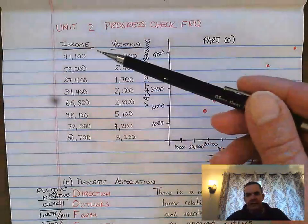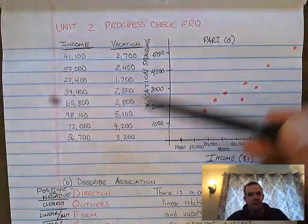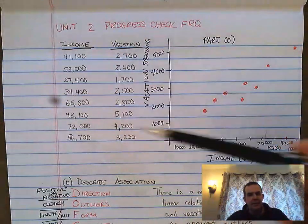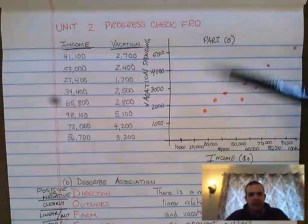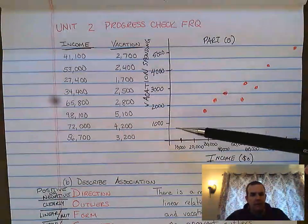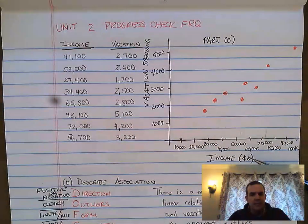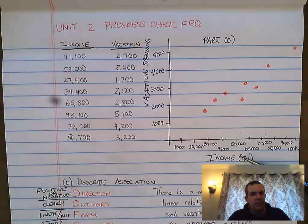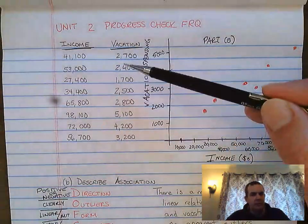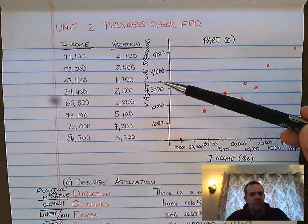The information they provide is income and vacation — so this is how much money people make and then how much they spend on vacation. Much like we did with the histogram, we need to make ourselves a graph. Along the horizontal, we have the explanatory variable, which is the income in dollars, because the more money you make, the more money you can spend on vacation. So explanatory is income, and response is vacation spending.